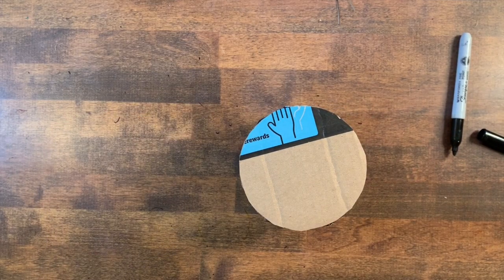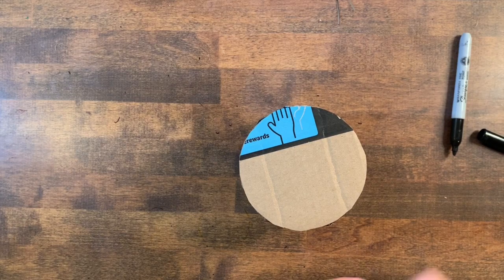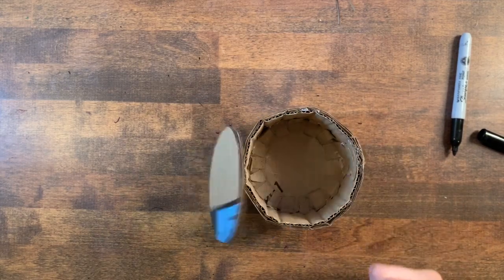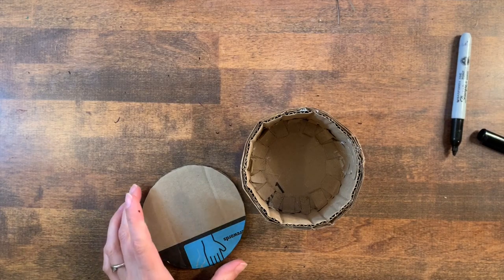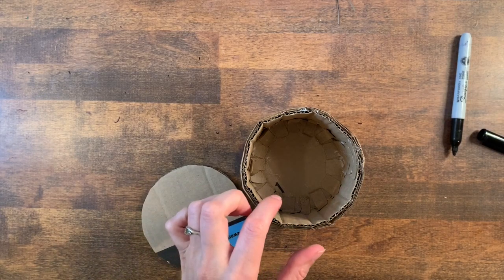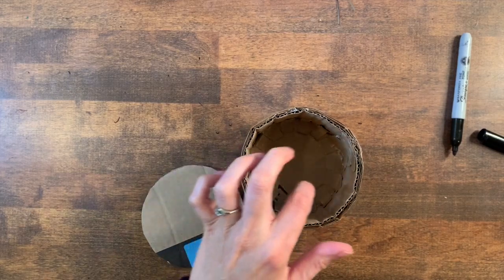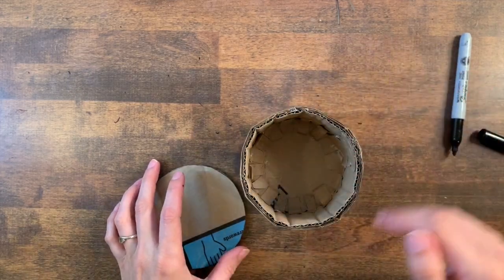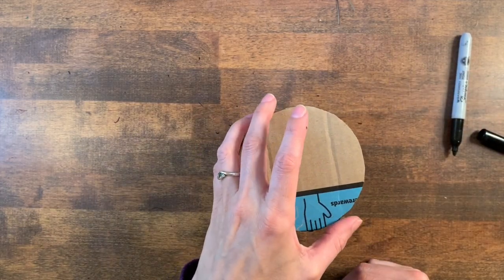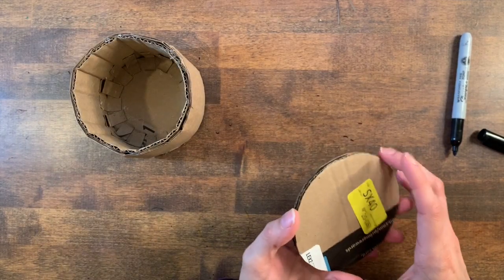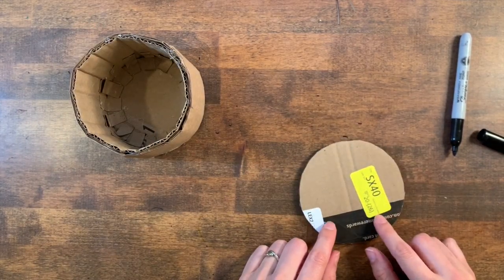The lid fits really nicely, but it will very easily fall off. So we need something to catch it on the inside so it doesn't just slide off. The easiest way to do that is to make a smaller version of these circles.